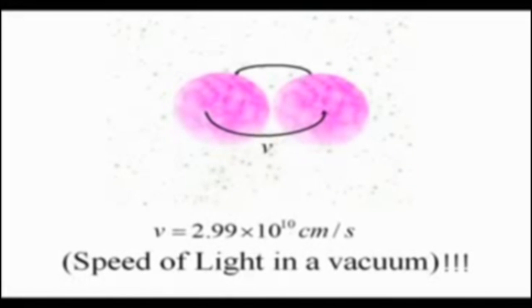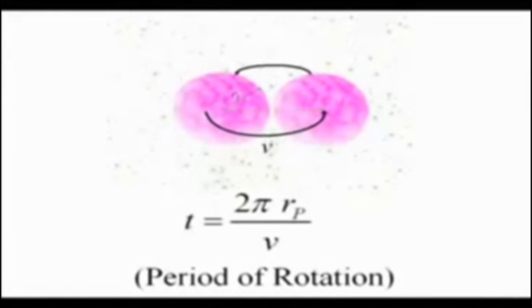This essentially means that the protons inside of a nucleus can be thought of as black holes orbiting each other at the speed of light. A fascinating concept.